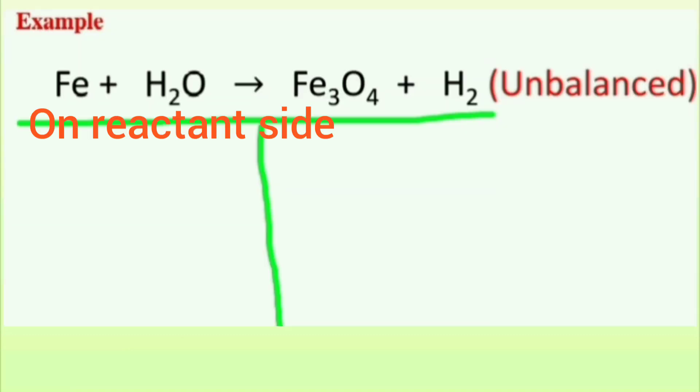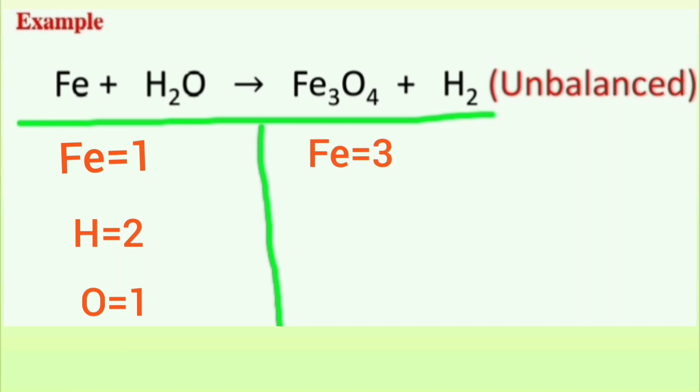Let's count each type of atom. I have one iron atom, two hydrogen atoms, one oxygen atom. On the product side I have three iron atoms, two hydrogen atoms, and four oxygen atoms.